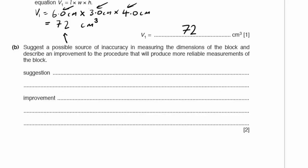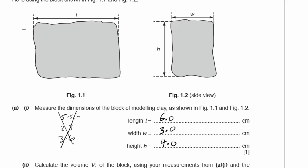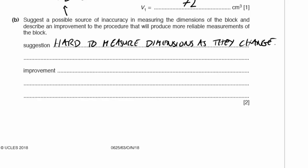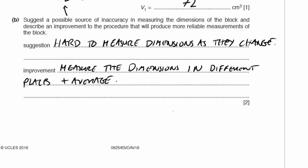Part B: suggest a possible source of inaccuracy in measuring the dimensions of the block and describe an improvement. The length changes depending on where you measure along the block, making it hard to get a consistent reading. An improvement would be to measure each of the dimensions — length, width, and height — in different places and take the average.